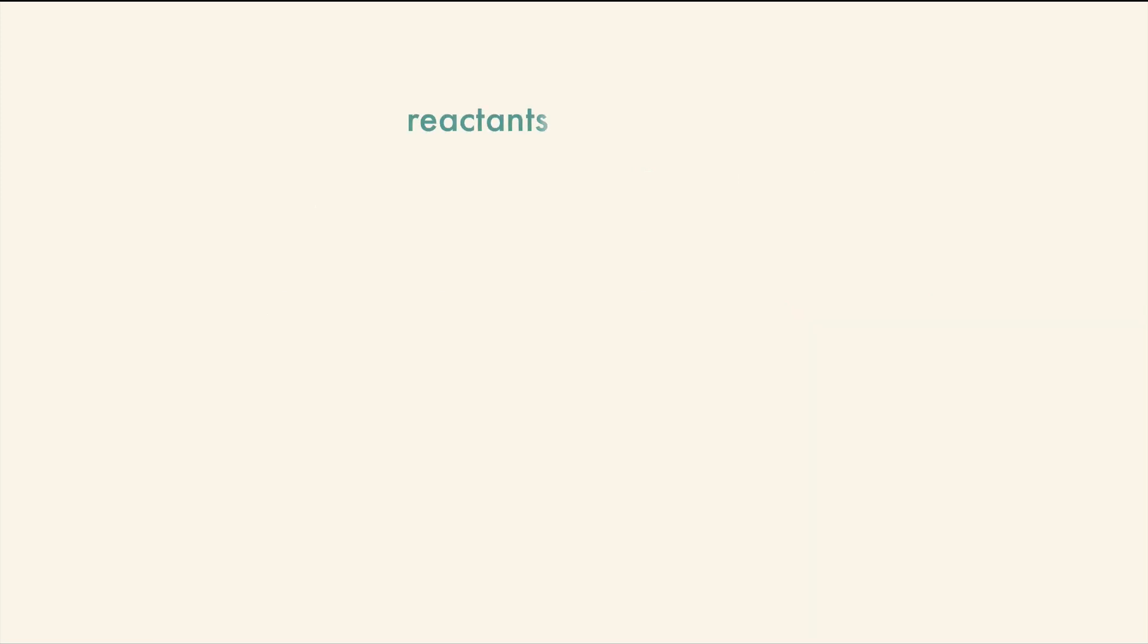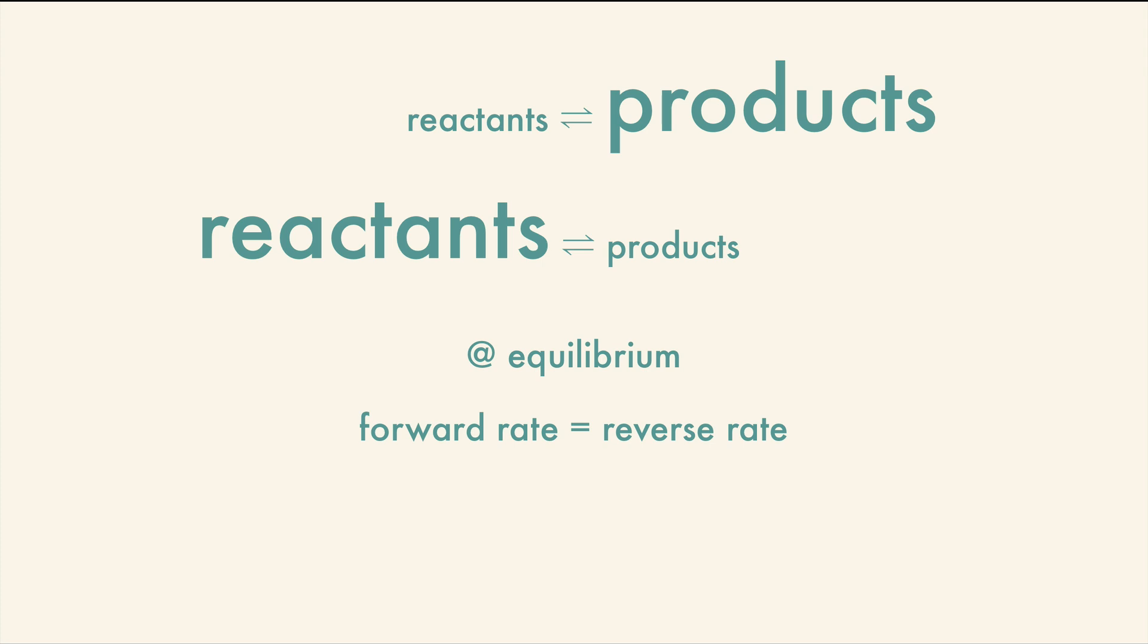Some reactions will create more products. Other reactions will create more reactants. But at equilibrium, the forward rate and reverse rate are equal, so that there is still no net change in the amount of reactants and products. That's equilibrium.